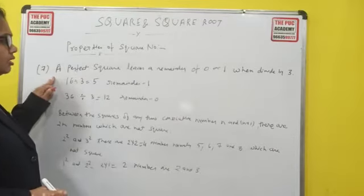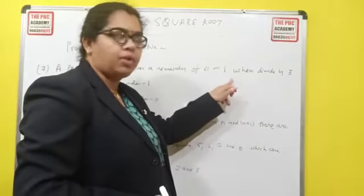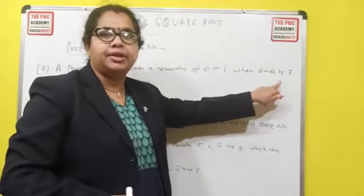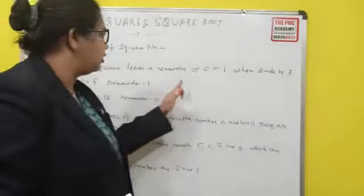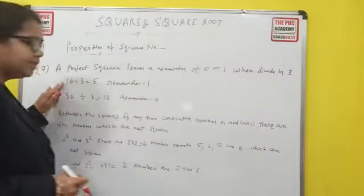A perfect square leaves a remainder of 0 or 1 when divided by 3. Let's take an example.